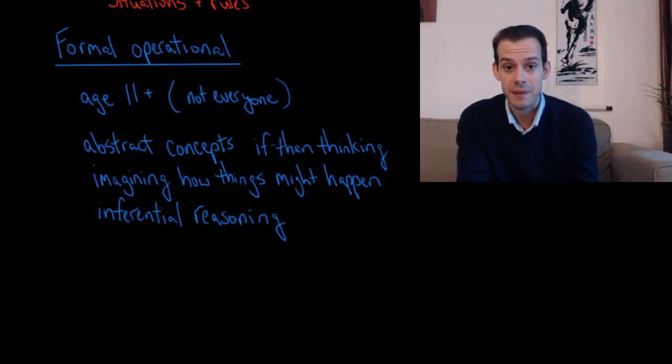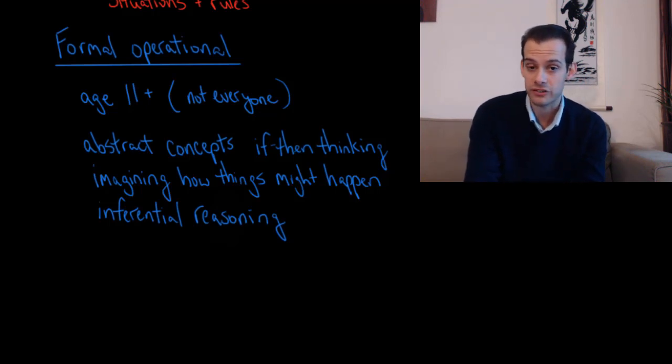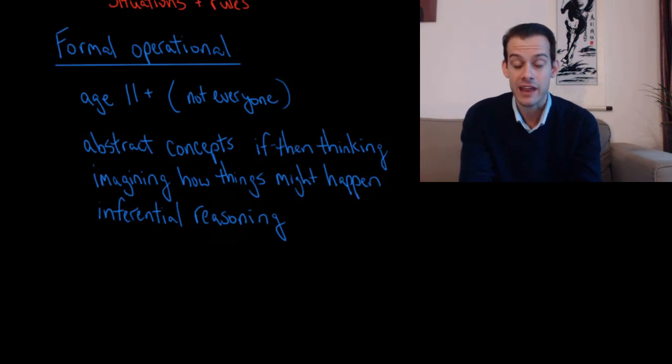They can imagine how things might happen and they can use inferential reasoning. They can take some hypothetical situation and imagine the possible outcomes, and then from there they can reason about which of those outcomes might be better given those hypothetical rules.